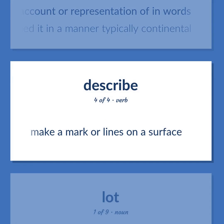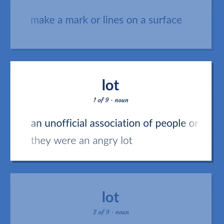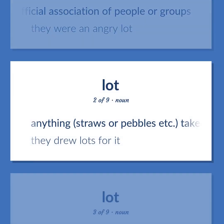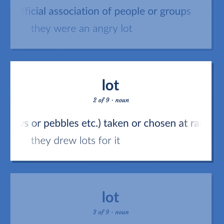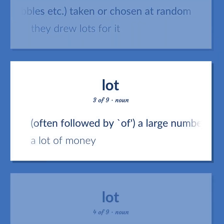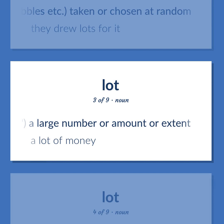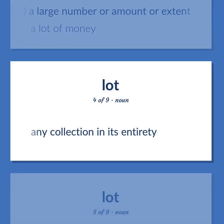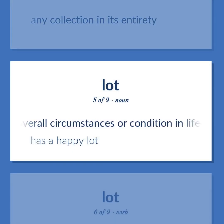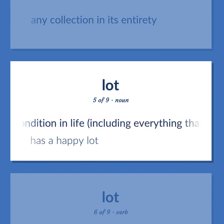Make a mark or lines on a surface. An unofficial association of people or groups. They were an angry lot. Anything — straws or pebbles, etc. — taken or chosen at random. They drew lots for it. Often followed by a large number or amount or extent. A lot of money. Any collection in its entirety. Your overall circumstances or condition in life including everything that happens to you. Has a happy lot.